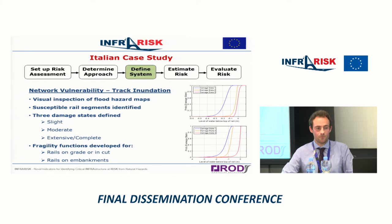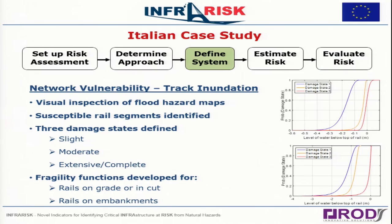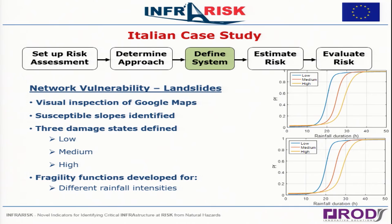For track inundation we defined slight, moderate, and extensive damage states, all with associated repair times, repair costs, and functional losses. Fragility curves in terms of water level allowed us to calculate the probability of being in different damage states, with curves developed for rails on grade or in cutting as well as rails on embankments. For rainfall-induced landslides we similarly had three damage states and developed fragility curves giving probabilities of failure for various rainfall durations.